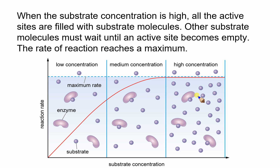In the third portion of the graph, things begin to level off. The substrate concentration is so high that all active sites are filled, and other substrates have to wait before an active site is empty. There's no way the reaction can get any faster.